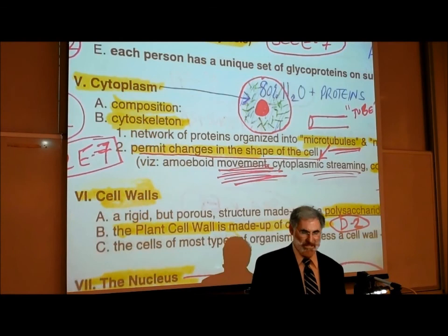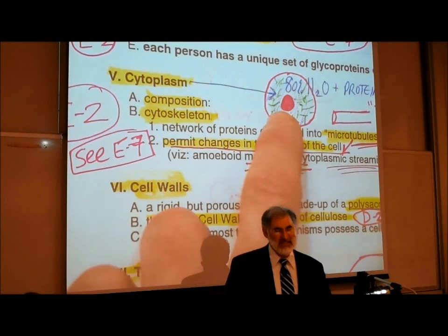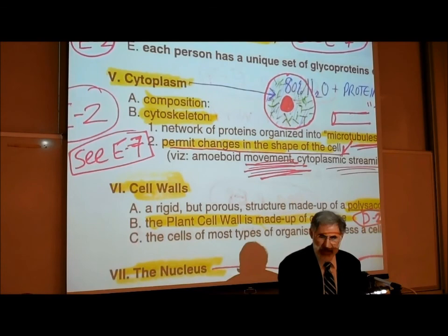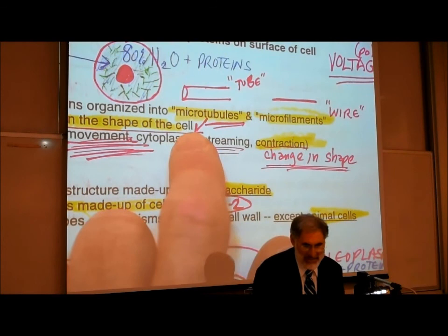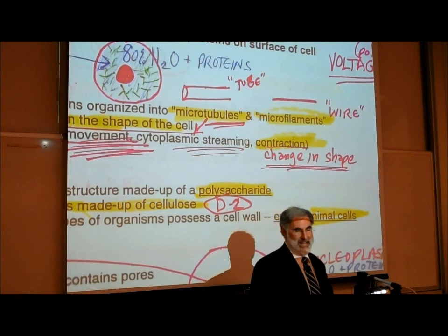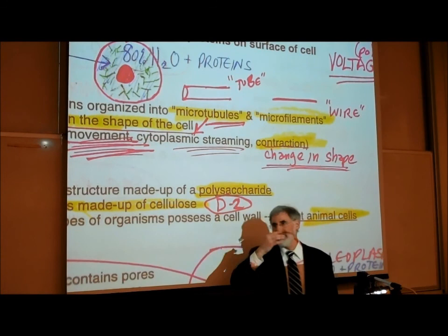Just as we have a skeleton that gives us form and shape in the form of bones, the proteins in the cytoplasm give the cell its shape and form. Some of these proteins are described as microtubules — tube-shaped, hollow in the center, like a pipe — and others are described as microfilaments, which are thinner and more like a solid wire.